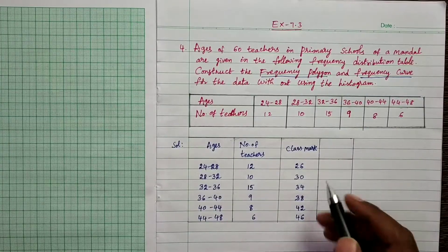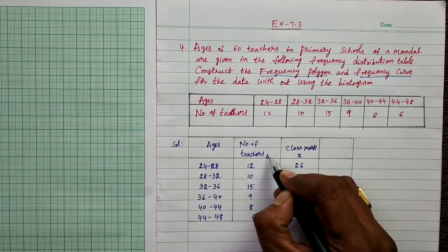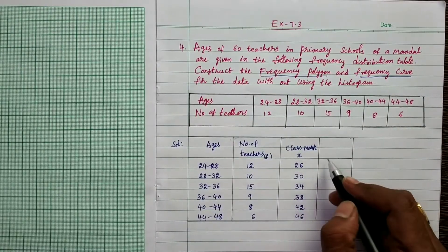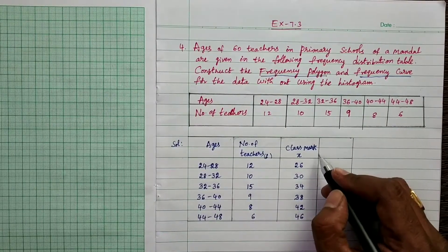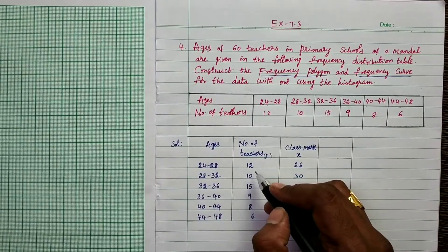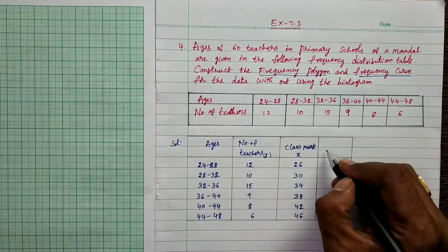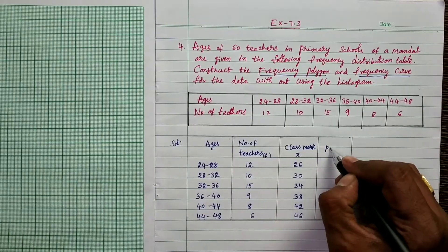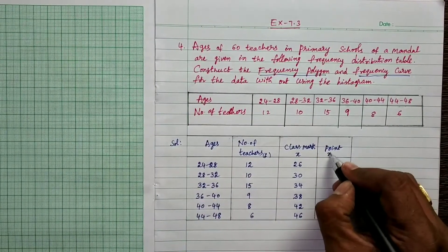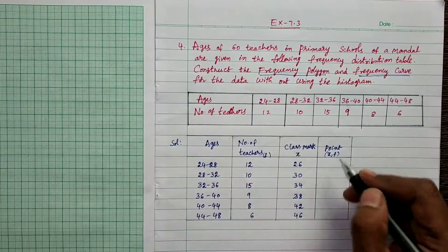Take class mark as x and frequency as f. Class mark is taken on the x-axis and frequency on the y-axis. Points are considered as (x, f), that is class mark to frequency. The first point is (26, 12).